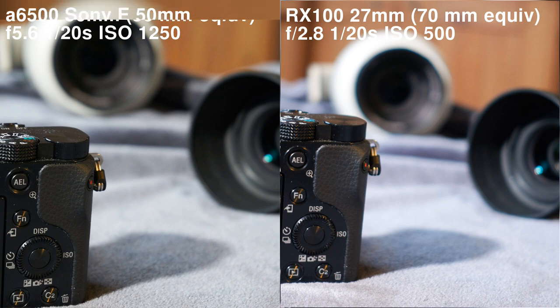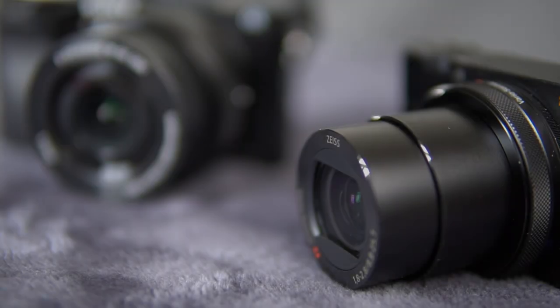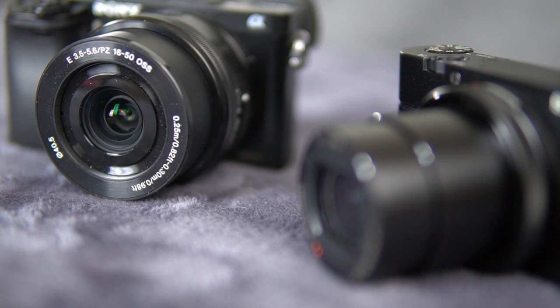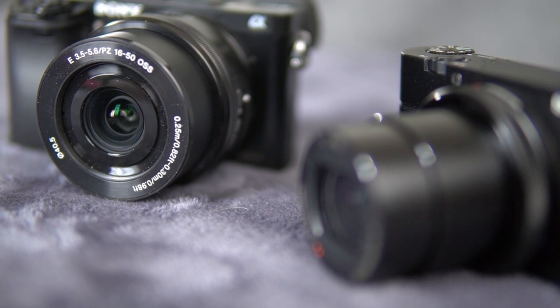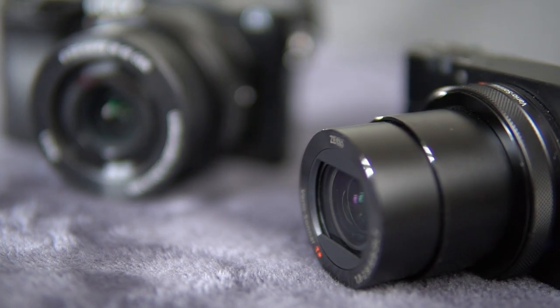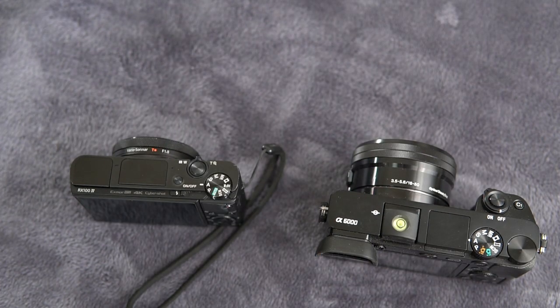For comparison, if we put a bright prime lens on the a6500, it has a much stronger effect than either. So, can we draw any conclusions from this? I think we have seen today that the RX100 is as good or better than the a6500 with the kit lens in every situation.